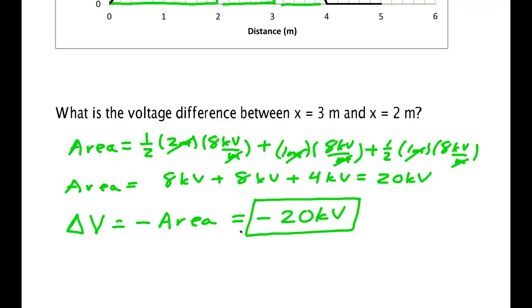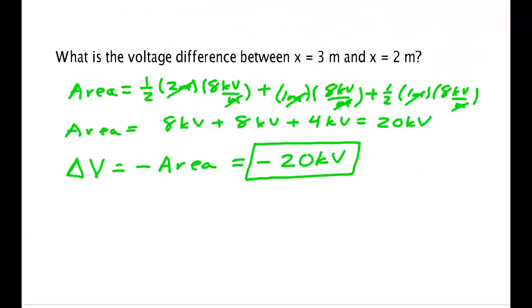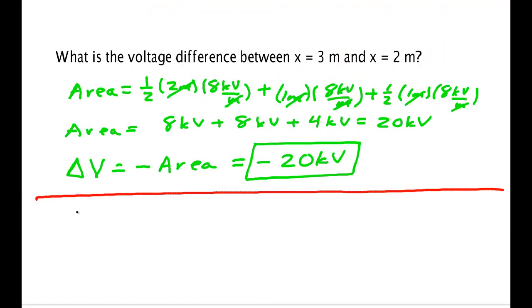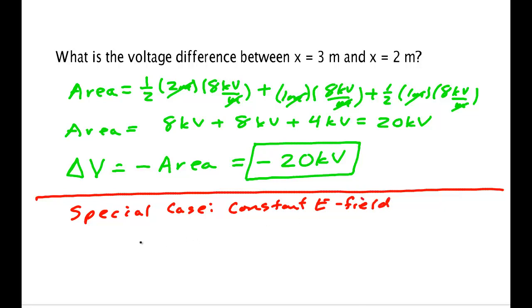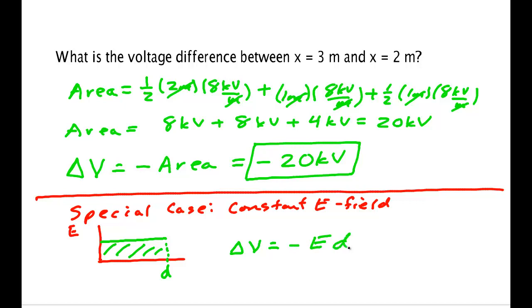So if you've got a plot of electric field versus position, you just find the area under the curve and you can determine the voltage. Now some curves are easier than others. One of the more famous types is the electric field between two charged plates — a special case: a constant E-field. The field is some value E over a distance d, and delta-V equals minus E·d. This is found in the parallel plate capacitor.